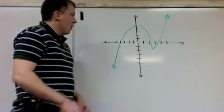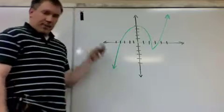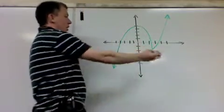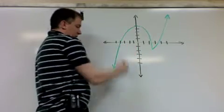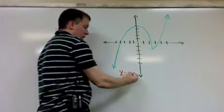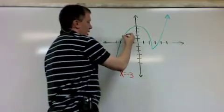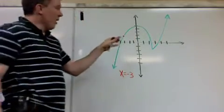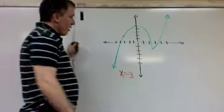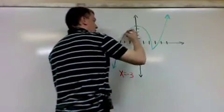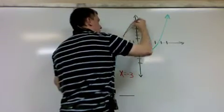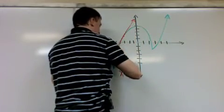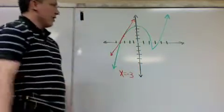Let's look at a few specific places. At x = -3, the graph is right there above negative 3. Looking at the tangent line, it seems to be heading in about that direction — so here's my tangent line.